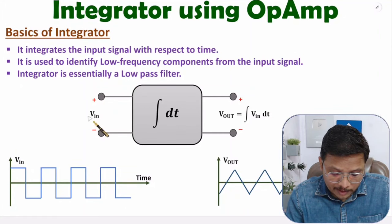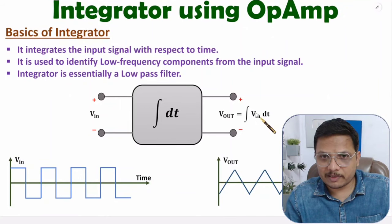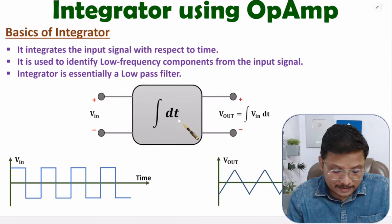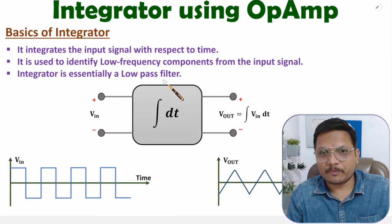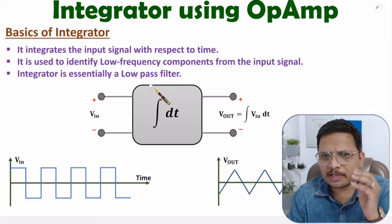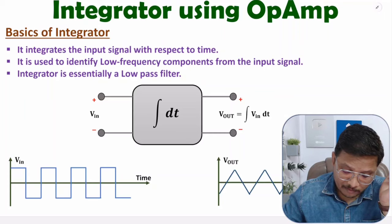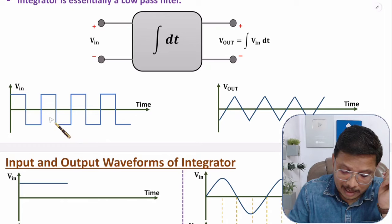Whatever low-frequency components are present in the input signal are allowed to pass through the integrator, meaning low-frequency components will be present at the output side. High-frequency components are blocked by this integrator. This means the integrator is essentially a low-pass filter — one should know this, as it can appear in competitive examinations. When it comes to waveforms, one should know that if the input is a square wave, then the output will be a triangular wave with the integrator.